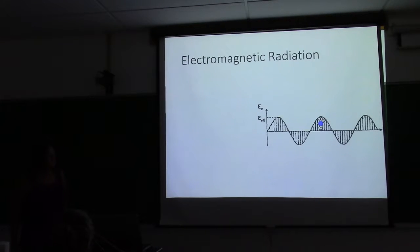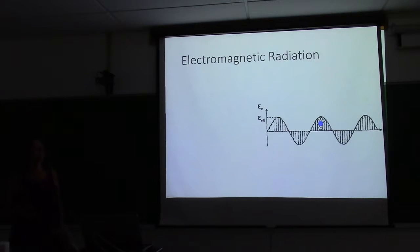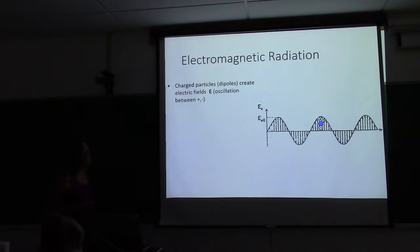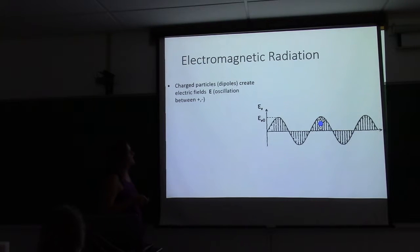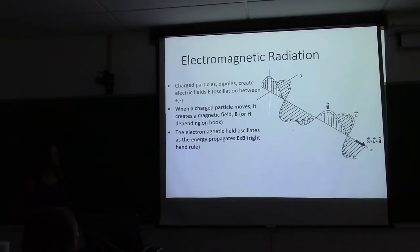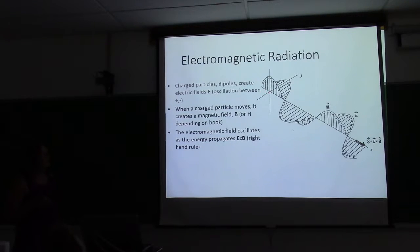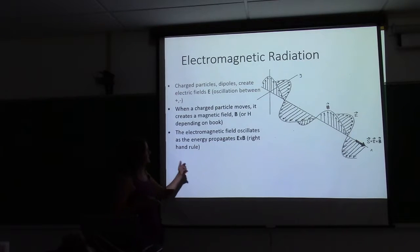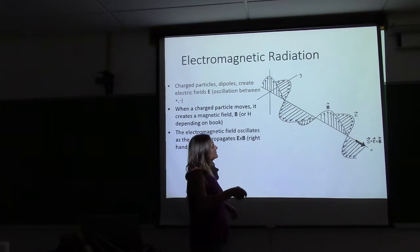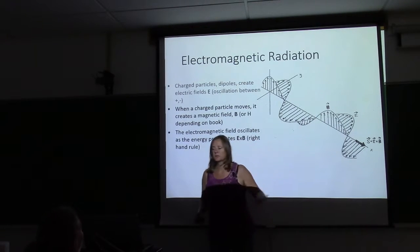I want to start with electromagnetic radiation. It's important to understand the basis of absorption — it helped me think about absorption in a different way when I learned about this in graduate school. If you think about charged particles, a dipole, oscillating, that can create an electric field — this oscillation between plus and minus — and when that particle moves, it's creating a magnetic field. Depending on the textbook, the magnetic field is either B or H, and those are at 90 degrees.